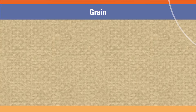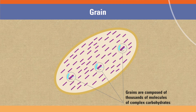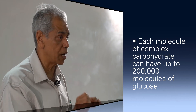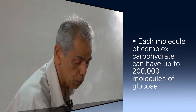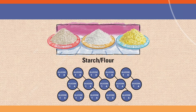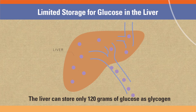Let me give you some mechanisms that make sense. Each kernel of grain is composed of thousands of molecules of complex carbohydrates. Each complex carbohydrate can have up to 200,000 molecules of glucose. So when you eat anything with starch or grain flour, you are literally eating pure glucose — whether it is from rice or wheat, whether it is whole grain or multigrain, makes no difference. The body can hold on to 120 grams of glucose as glycogen in the liver to be released back into the blood when blood sugar goes down. Everything else has to be converted to fatty acid and fat for long-term storage.